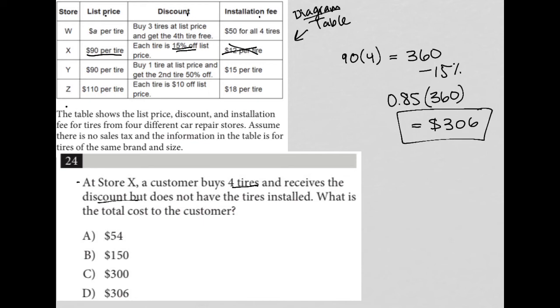We could have also just said 360 minus 0.15 times 360. You'd end up getting the exact same value. This is 100% of costs minus 15% of the cost. So $306 is the best answer to this question.